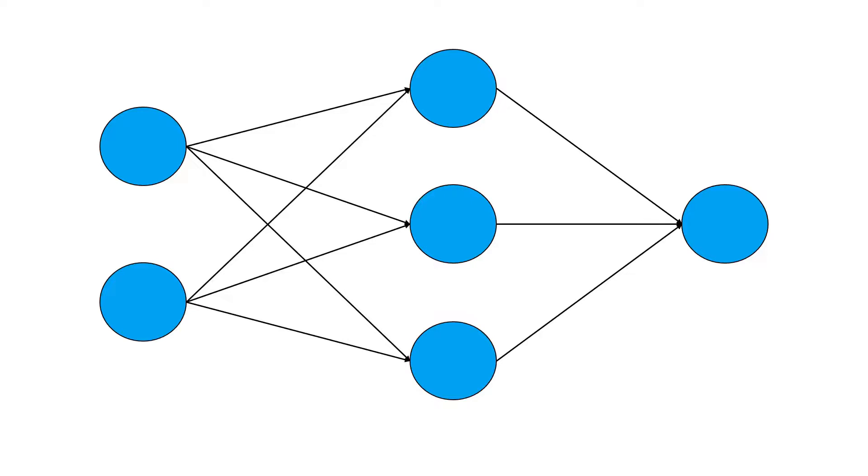A block of nodes is also called a layer. Neural networks have different types of layers. First, input layers, where no computation is done—they just pass the information to the next layers, in this case the hidden layer, and normally always to the hidden layer. In the hidden layer, intermediate processing and computation is done.